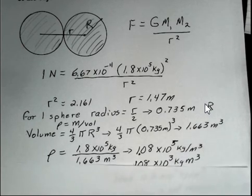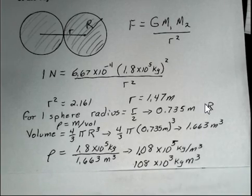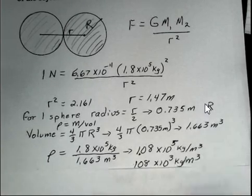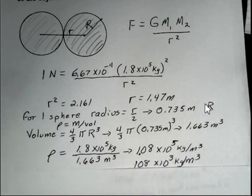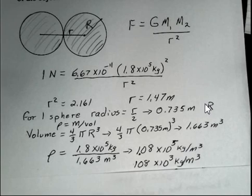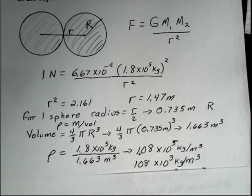So if I want to switch this to 10 to the thirds kilograms per cubic meter, then I have to shift the decimal place two places to the right. So it's 108 times 10 to the third kilograms per cubic meter.